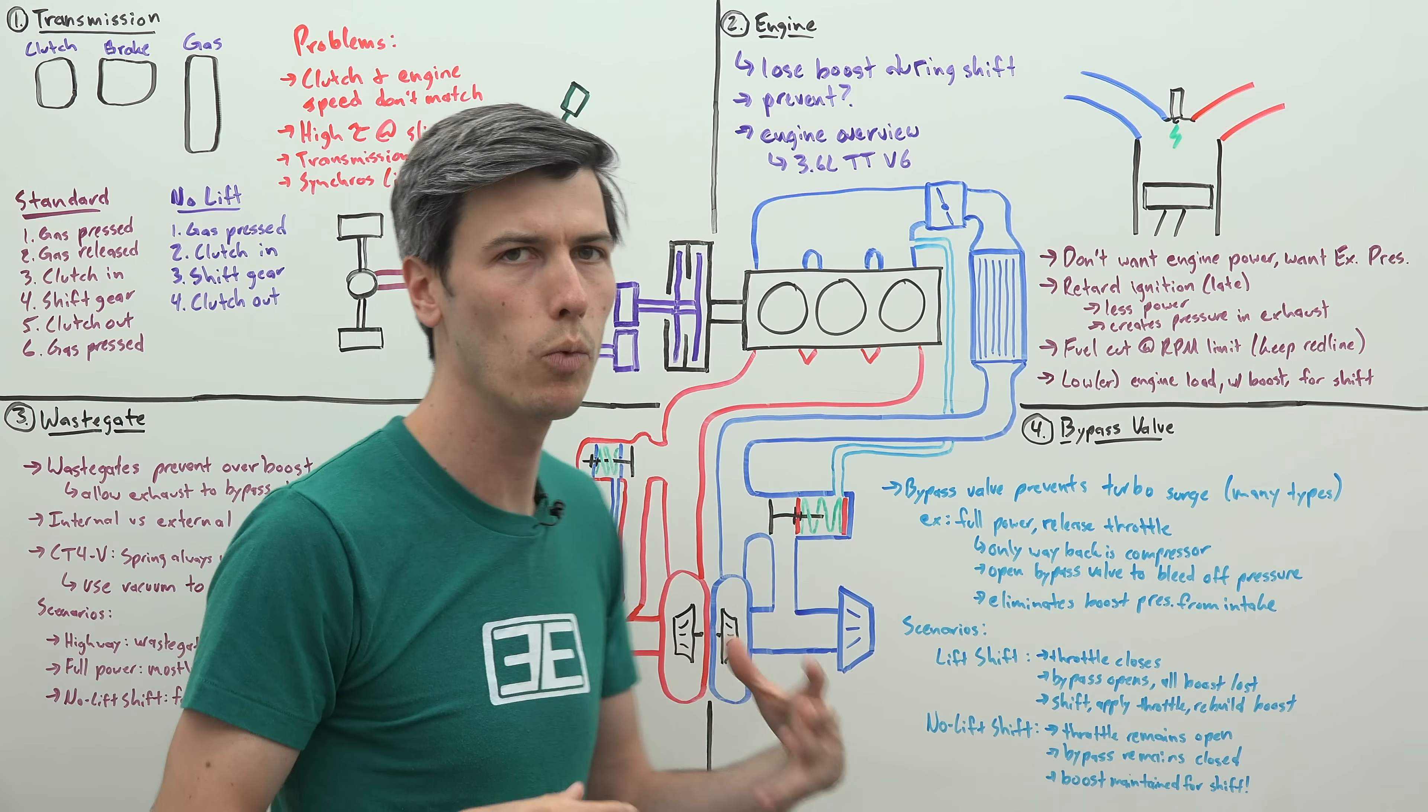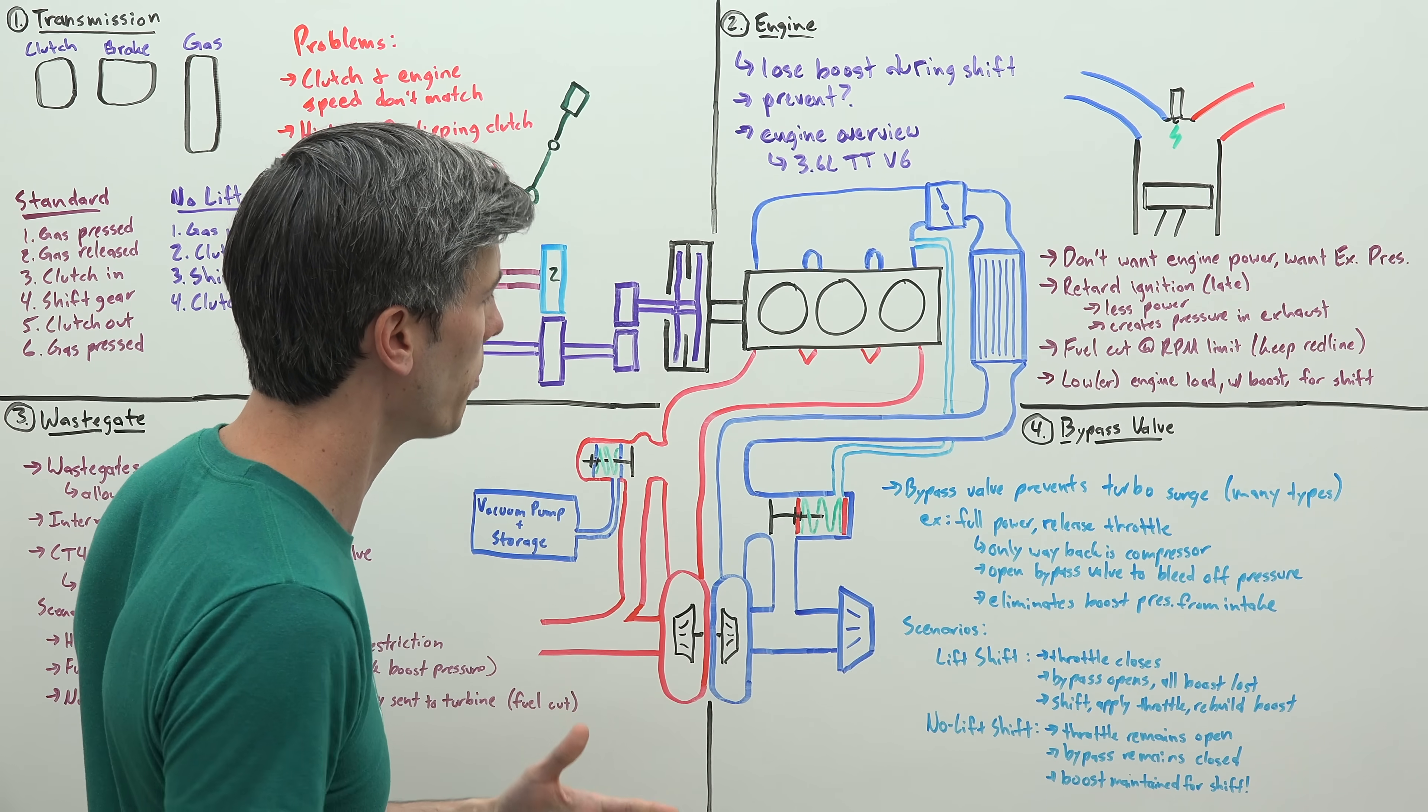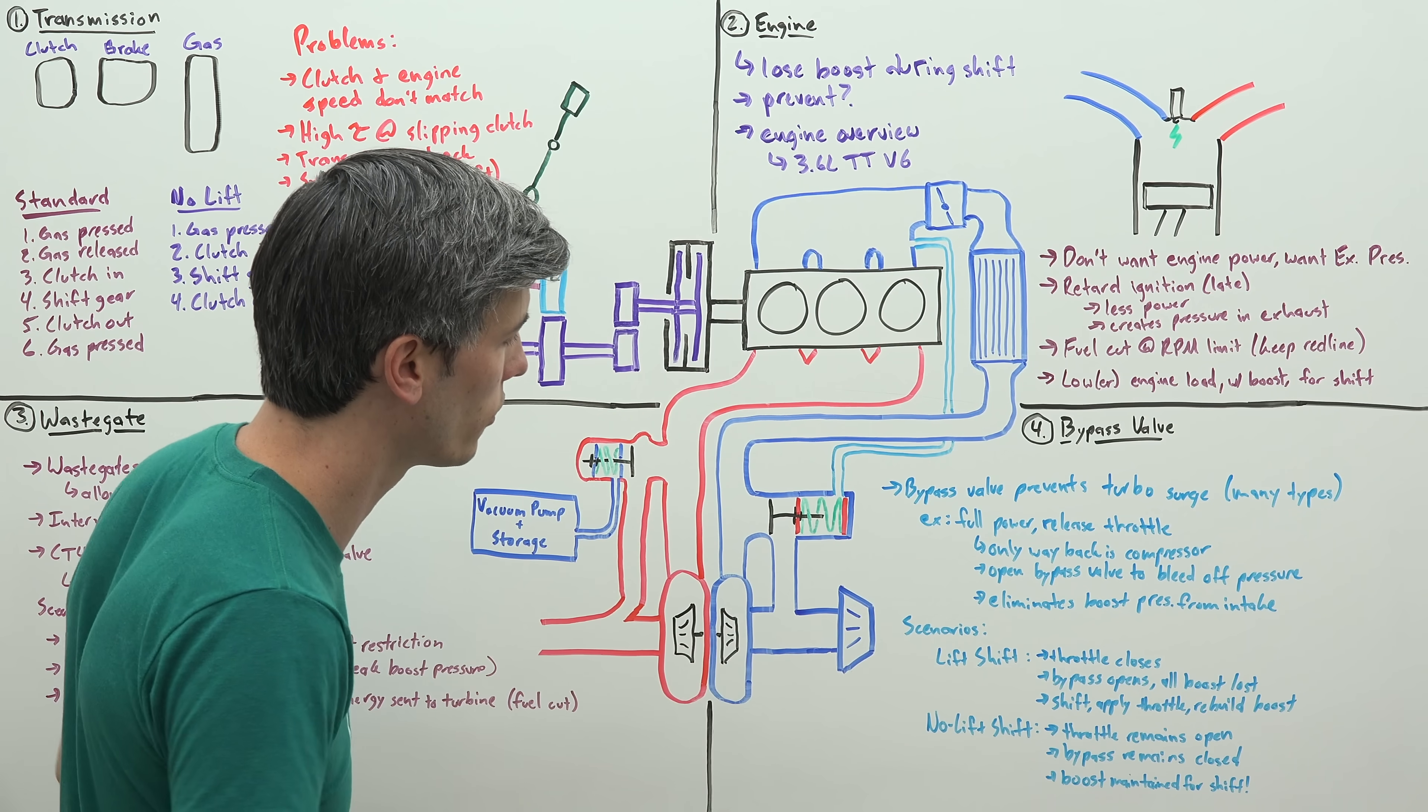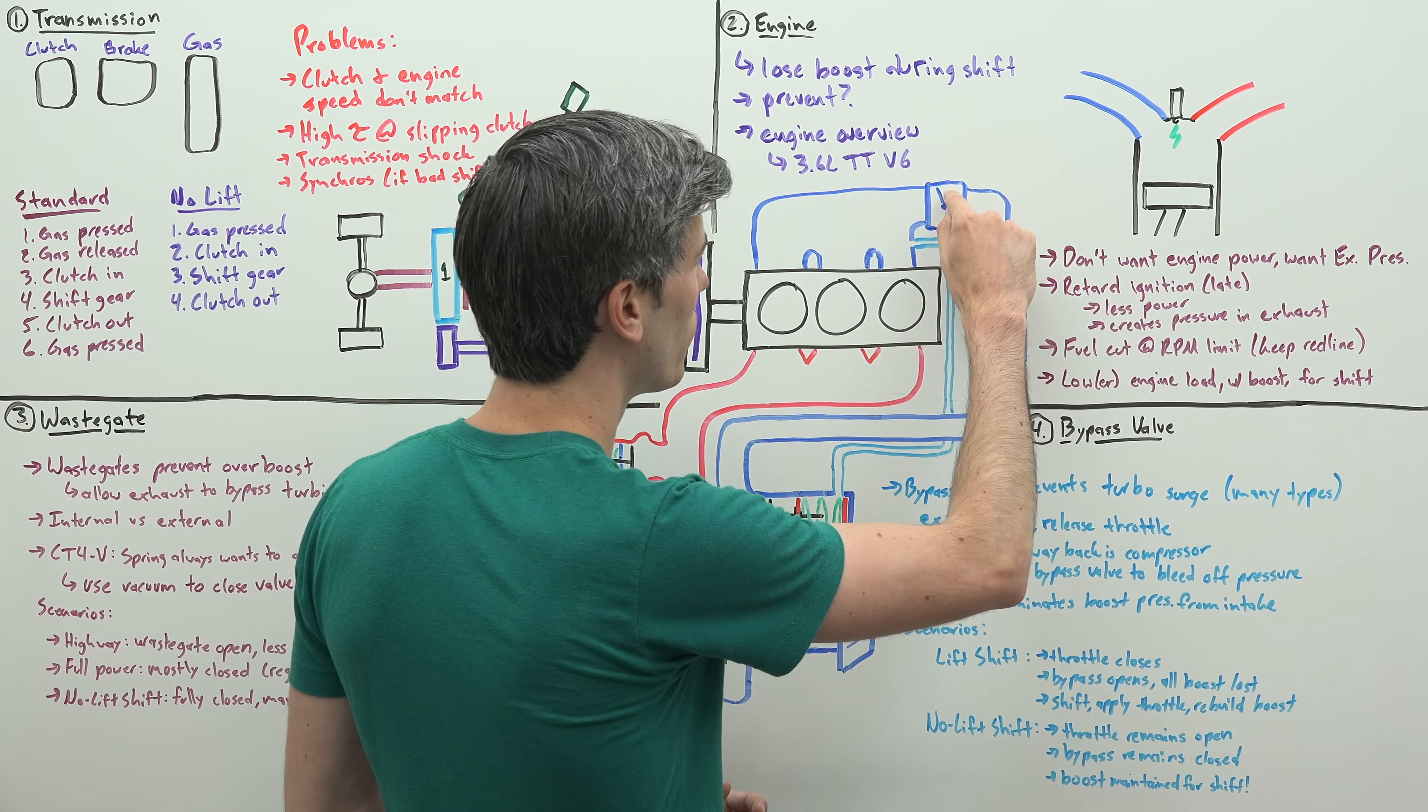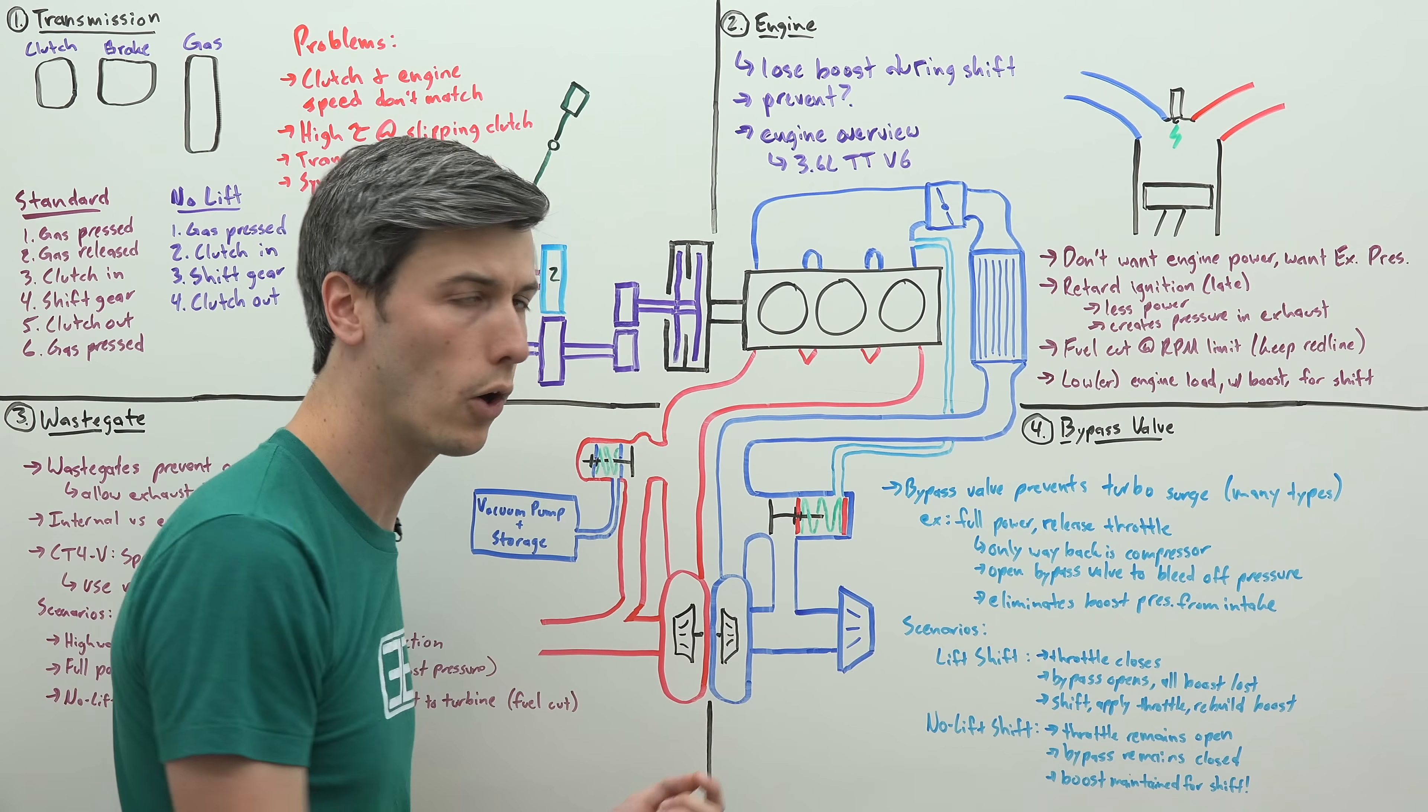So you're taking time away from acceleration because you're not at full power immediately once you're back into gear. So with the no lift shift scenario, what Cadillac is doing in this scenario is when you leave your foot down, this means this throttle is always open, which means there's never a time that this bypass valve opens...